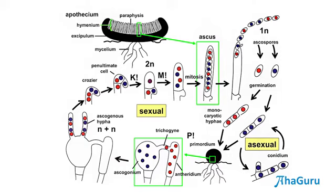These dikaryotic hyphae grow, and then one cell of the dikaryotic mycelium starts producing an elongated sac-like structure known as ascus. Inside the ascus, the two nuclei unite forming a zygote. The zygote nucleus undergoes meiosis to produce four nuclei, and then one more mitosis to produce eight nuclei. All eight nuclei become eight ascospores.